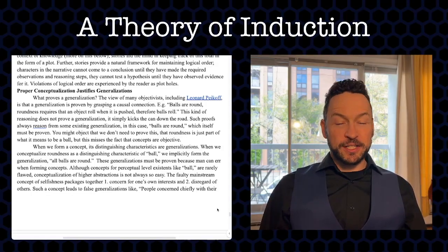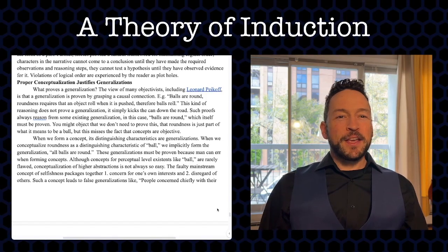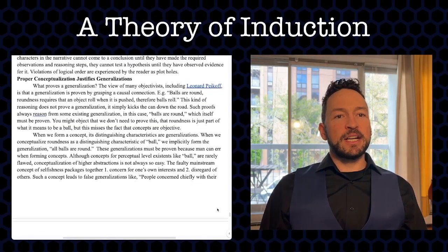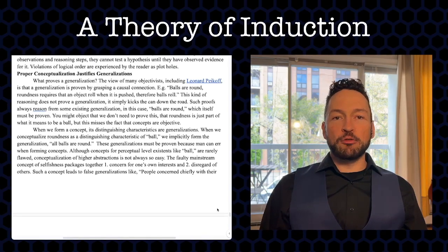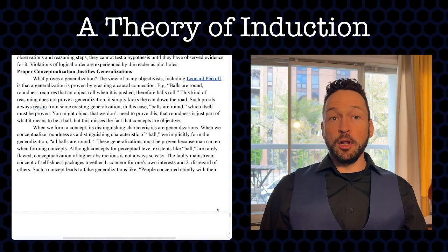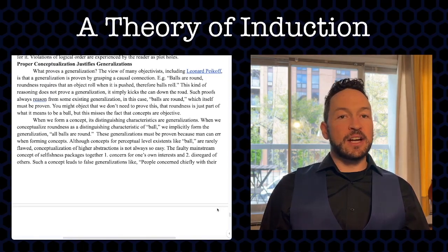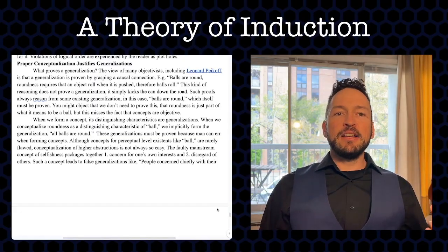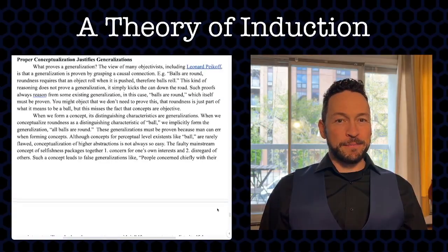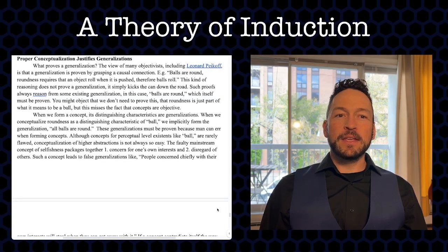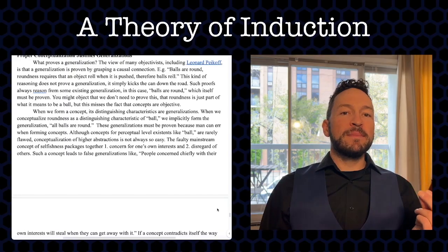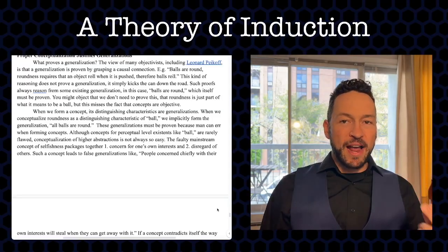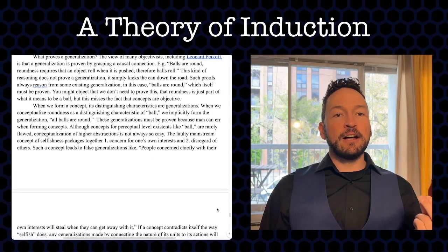Proper conceptualization justifies generalizations. The view of many objectivists, including Leonard Peikoff, is that a generalization is proven by grasping a causal connection — for example, balls are round, roundness requires that an object roll when pushed, therefore balls roll. This kind of reasoning does not prove a generalization, though. It simply kicks the can down the road, always reasoning from some existing generalization — in this case, that balls are round — which itself must be proven.